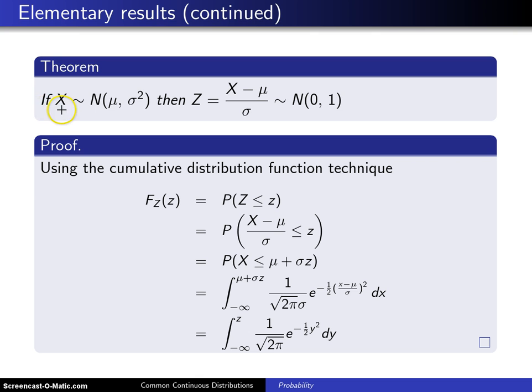It states if x has the normal distribution with population mean mu and population variance sigma squared, then the random variable z, which is x minus mu divided by sigma, that random variable will have the normal distribution with mean 0 and variance 1, that is a standard normal random variable.